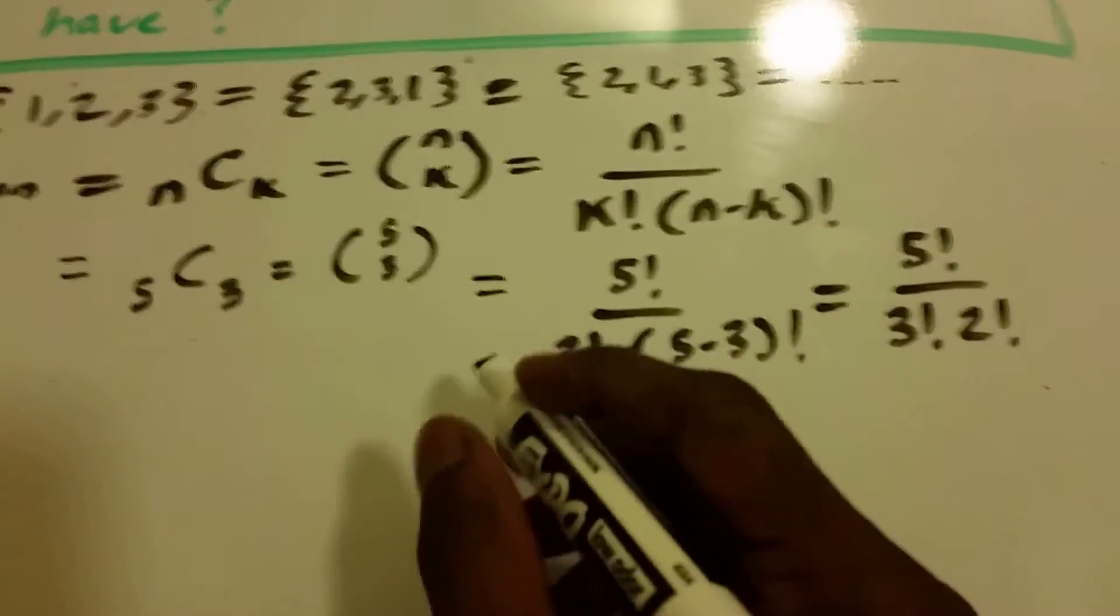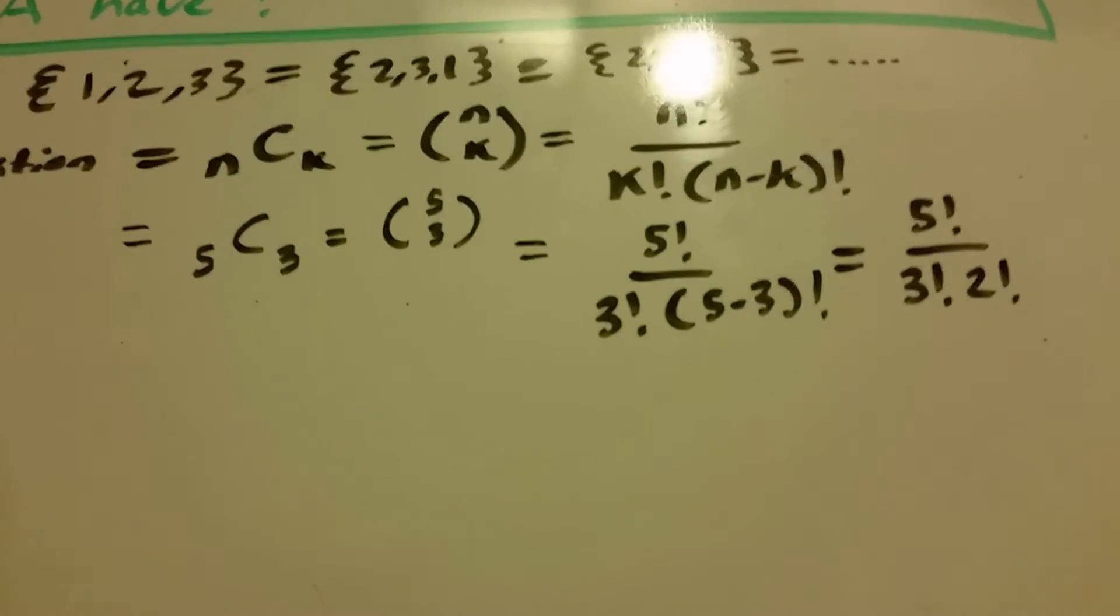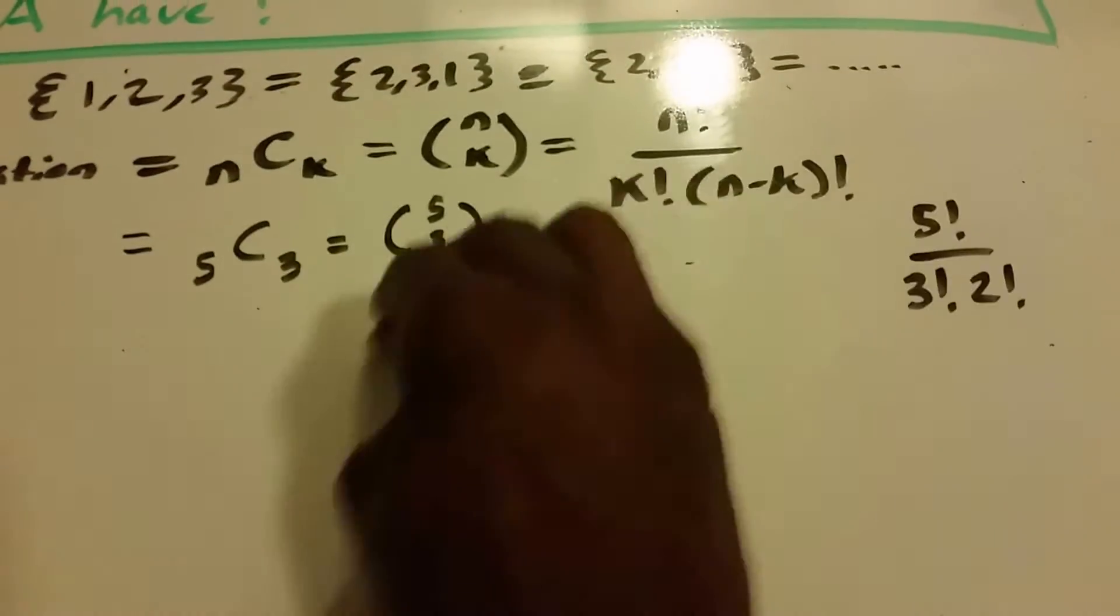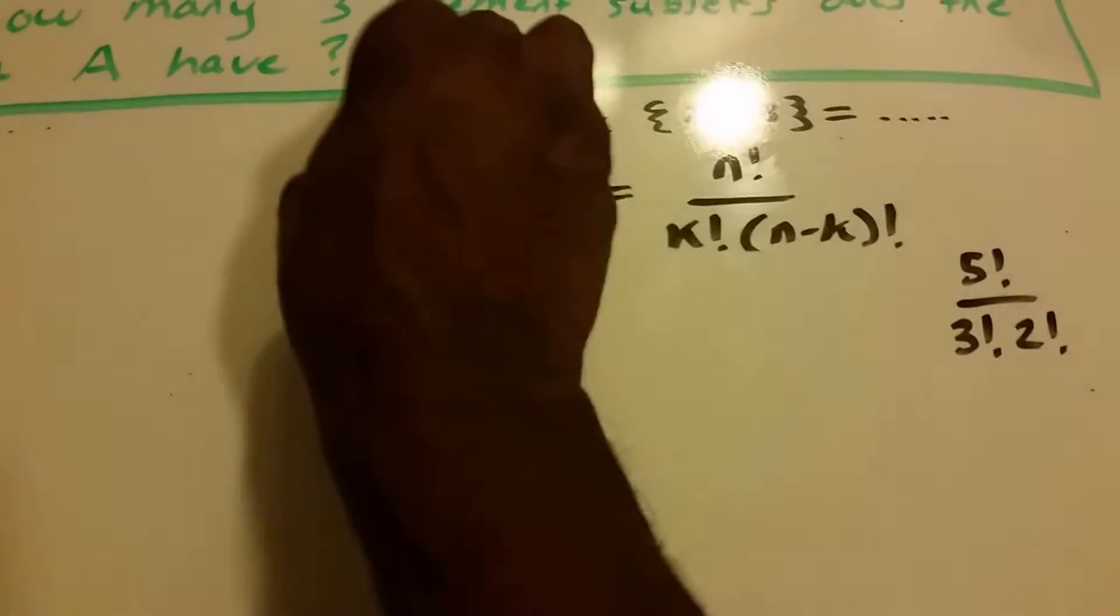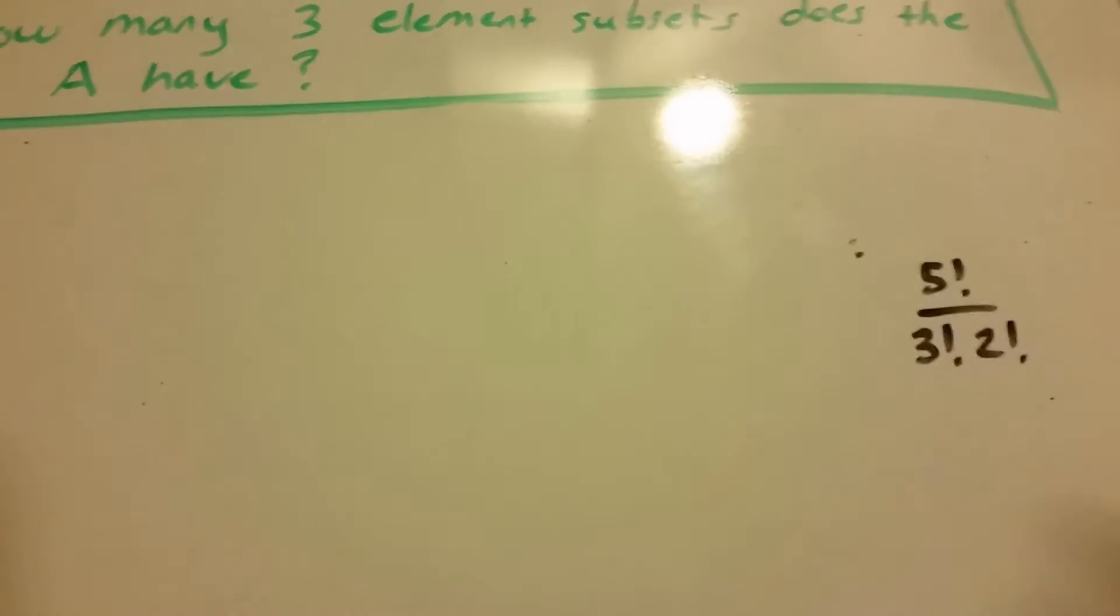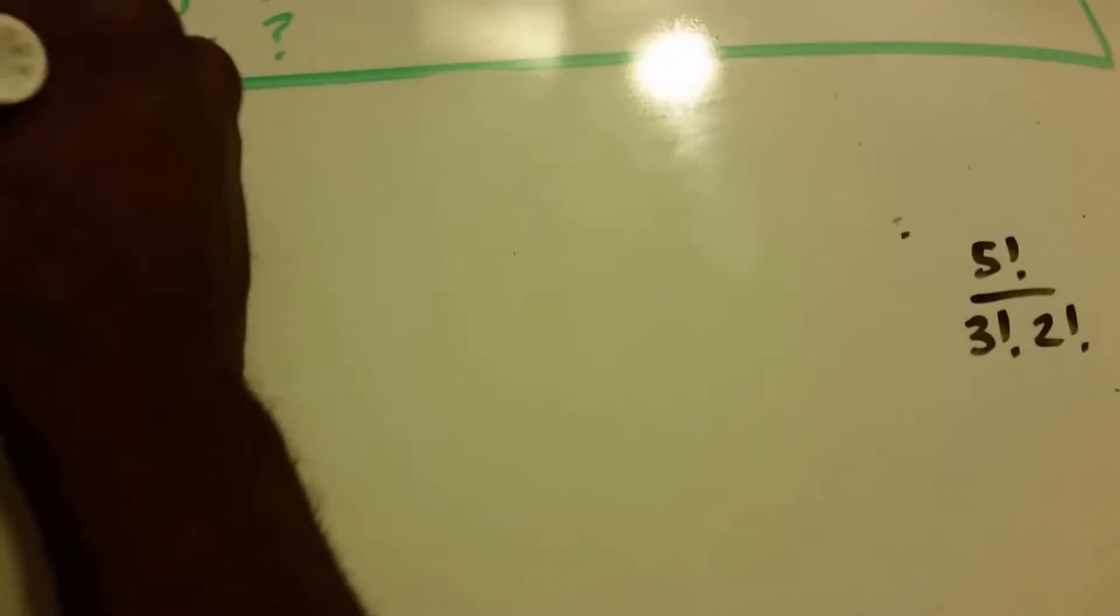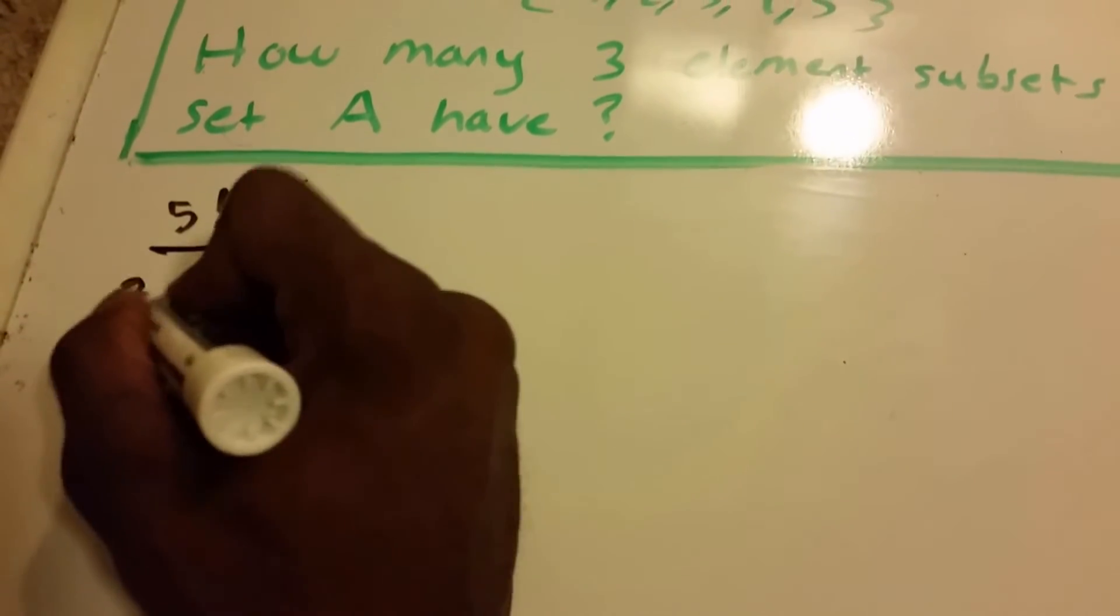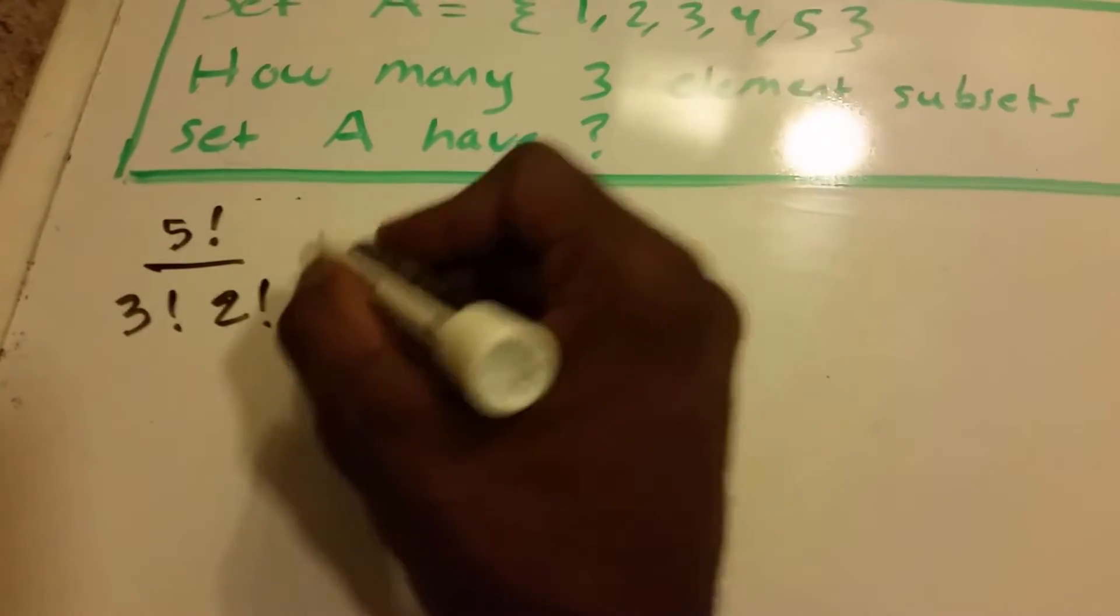And I'm going to continue here down. Actually, I'll just go ahead and erase this and keep that last solution we have, 5 factorial. So I'm going to rewrite that over here. So we have 5 factorial divided by 3 factorial times 2 factorial.